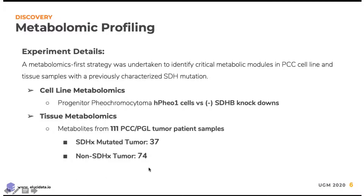We decided to take over 100 pheochromocytoma and paraganglioma fresh-frozen tumor samples and perform mass spec metabolomics. We had about 37 tumors with a succinate dehydrogenase gene mutation, including subunit B, C, or D, and 74 tumors without a succinate dehydrogenase mutation. In addition, our group had developed a human progenitor pheochromocytoma cell line derived from a patient tumor. Because the patient had no known germline driver mutations, we knocked down SDHB in that line and performed cell line metabolomics.